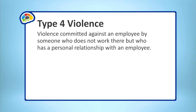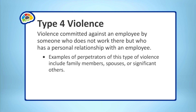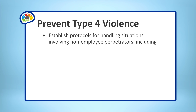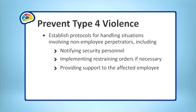Type 4 violence is the final category of workplace violence. It is violence committed against an employee by someone who does not work there but who has a personal relationship with an employee. Examples of perpetrators include family members, spouses, or significant others. Type 4 violence often stems from domestic disputes or personal conflicts that spill over into the workplace. It can be especially challenging for employers to address because the individuals involved may not be directly affiliated with the company. To help prevent Type 4 violence, employers should establish protocols for handling situations involving non-employee perpetrators, including notifying security personnel, implementing restraining orders if necessary, and providing support to the affected employee.